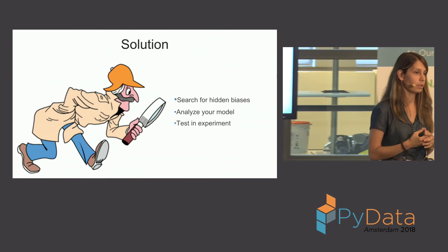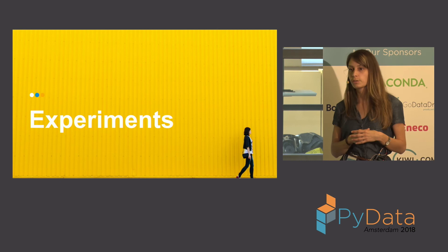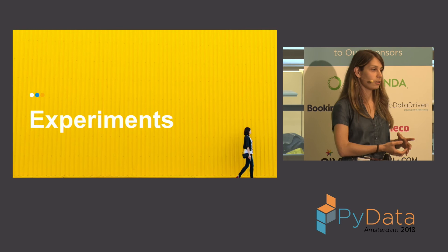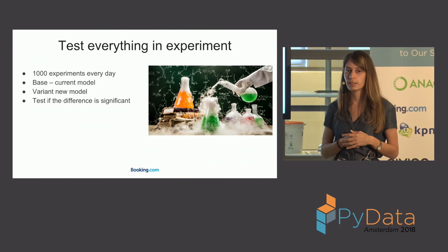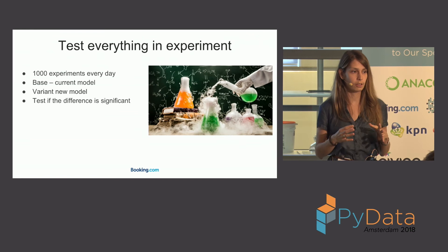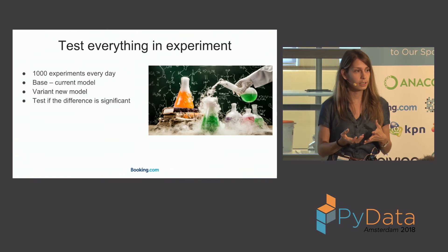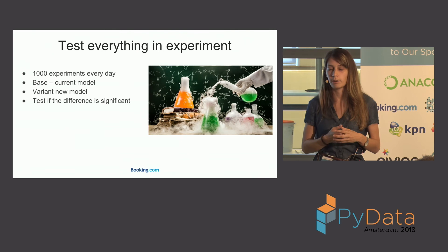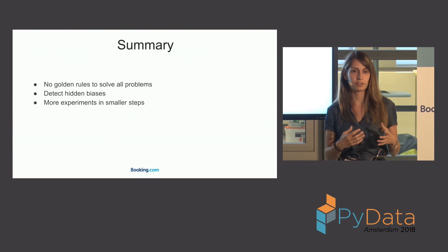This brings us to a very important part of the modeling process: experimentation. No matter how good your model was when testing it offline with the best performance on your test data, it might not be that good in reality. That's why at booking.com we have more than a thousand experiments running simultaneously on our website, dividing users into base and variant, measuring whether there's a significant difference in the effect — so we can definitively say whether there's a real impact on users or whether the model was only performing well on test data.